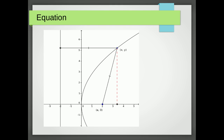We equate the length of the line from the focus to the point on the parabola to the length of the line from the point to the directrix. The first line has length √((x − a)² + y²) by Pythagoras's theorem, and the line from the point to the directrix is x + a. Squaring both sides and expanding, we cancel the x² terms, cancel the a² terms, and move the −2ax to the other side to get y² = 4ax.